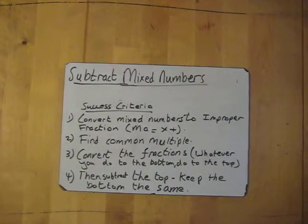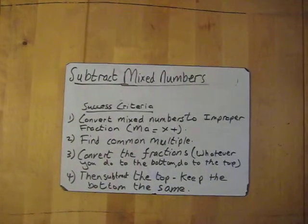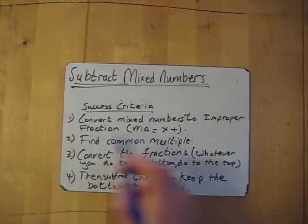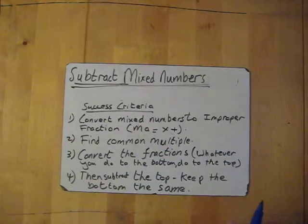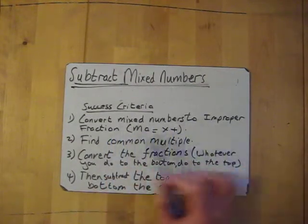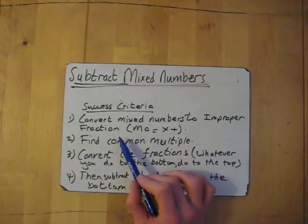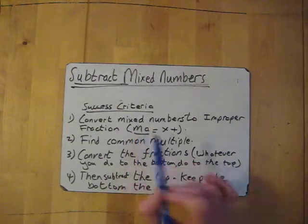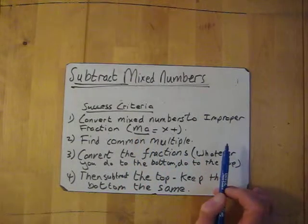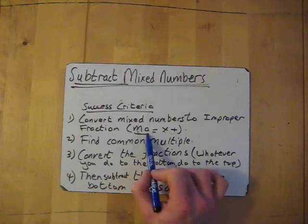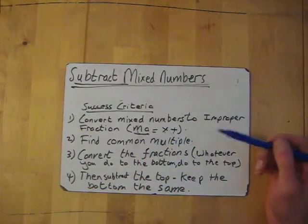We're going to have a go at subtracting mixed numbers. The success criteria for this is very similar to adding mixed numbers as well — it's all about converting the mixed numbers to improper fractions. To do that you need to remember to ask your MA for help, and MA stands for multiply and add.